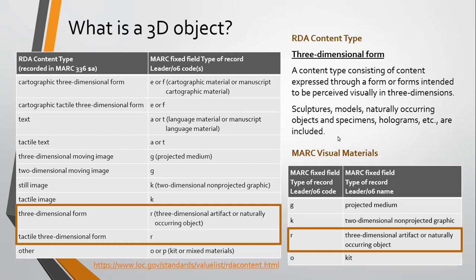MARC visual materials fall into four types represented by codes G, K, R, and O: projective medium, two-dimensional non-projective graphic, three-dimensional artifact or naturally occurring object, and kit. 3D artifacts and naturally occurring objects are coded R, and that is what we're focusing on when we talk about guidelines for 3D objects. This is also what OLAC's best practices for objects addresses — the group that falls under type of record R, equating to what RDA calls three-dimensional form or tactile three-dimensional form.